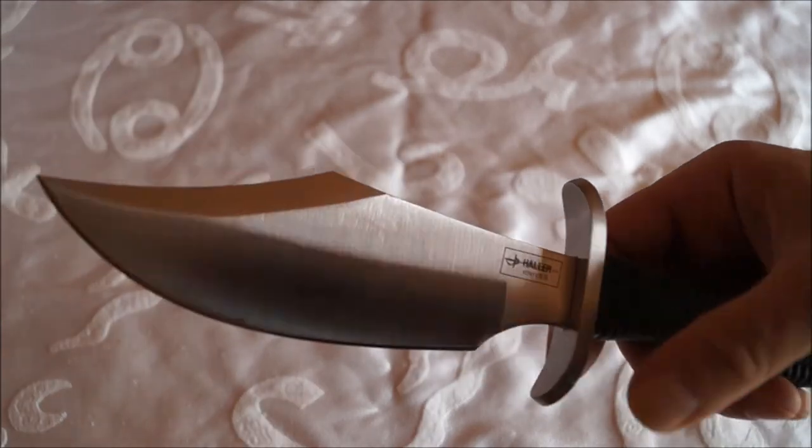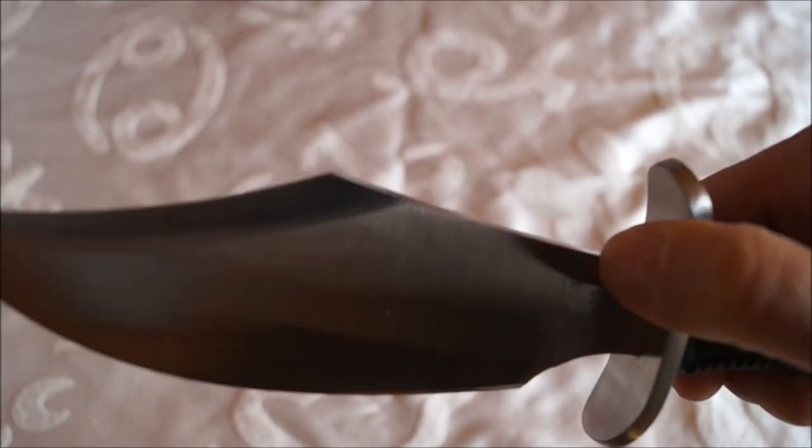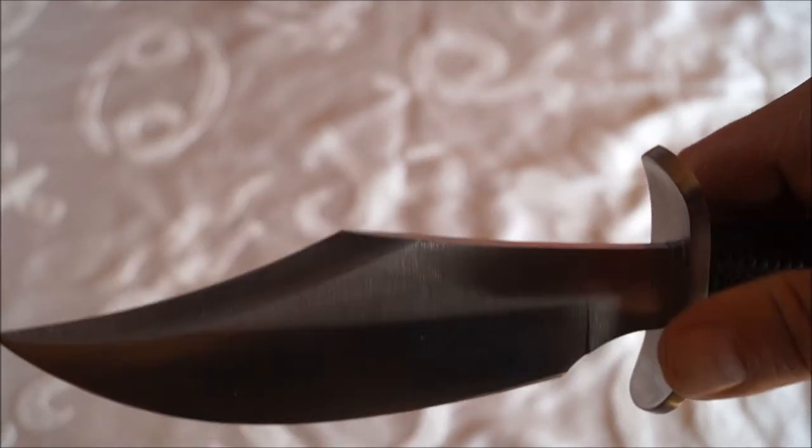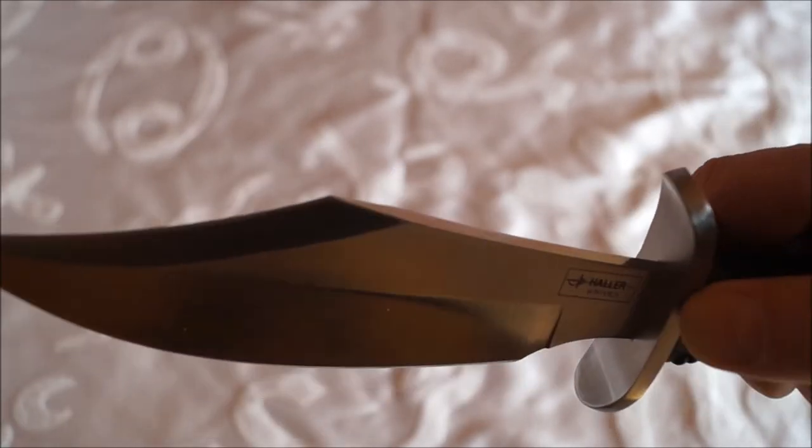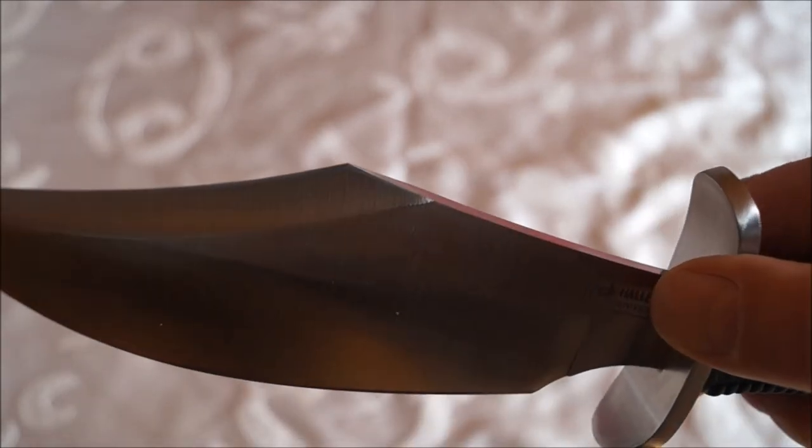Und jetzt schauen wir uns das Messer noch mal genauer an. Beginnen wir mit dem Klingenrücken, der ist leicht konvex, gebogen, aufstrebend bis zum Clippoint.